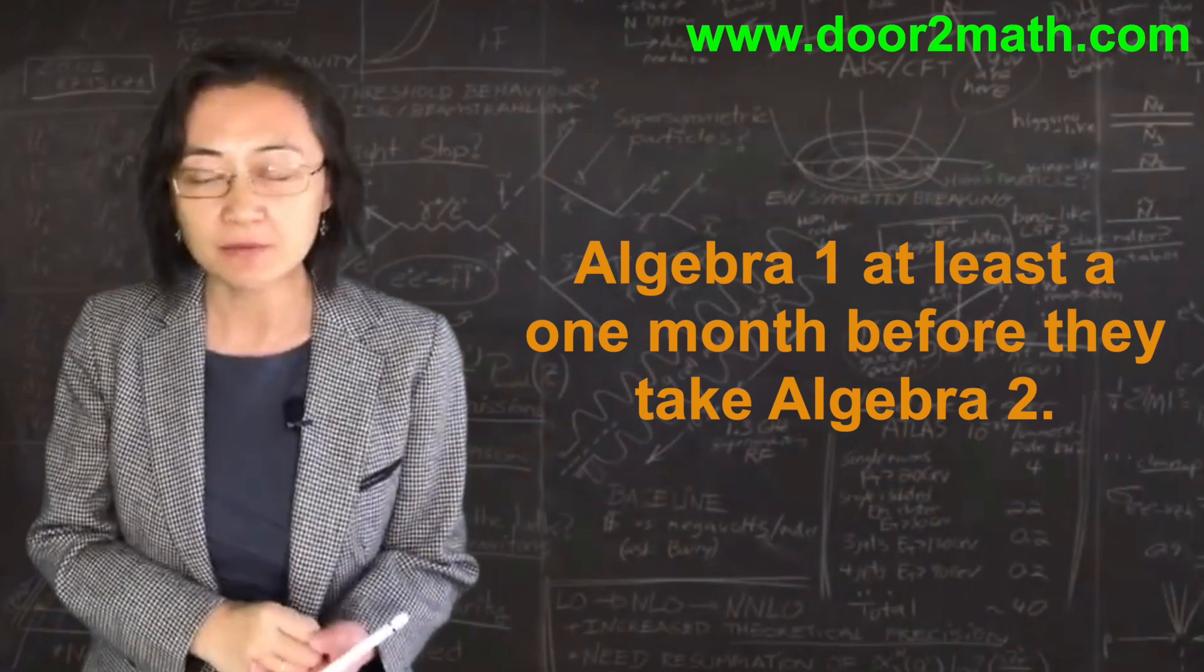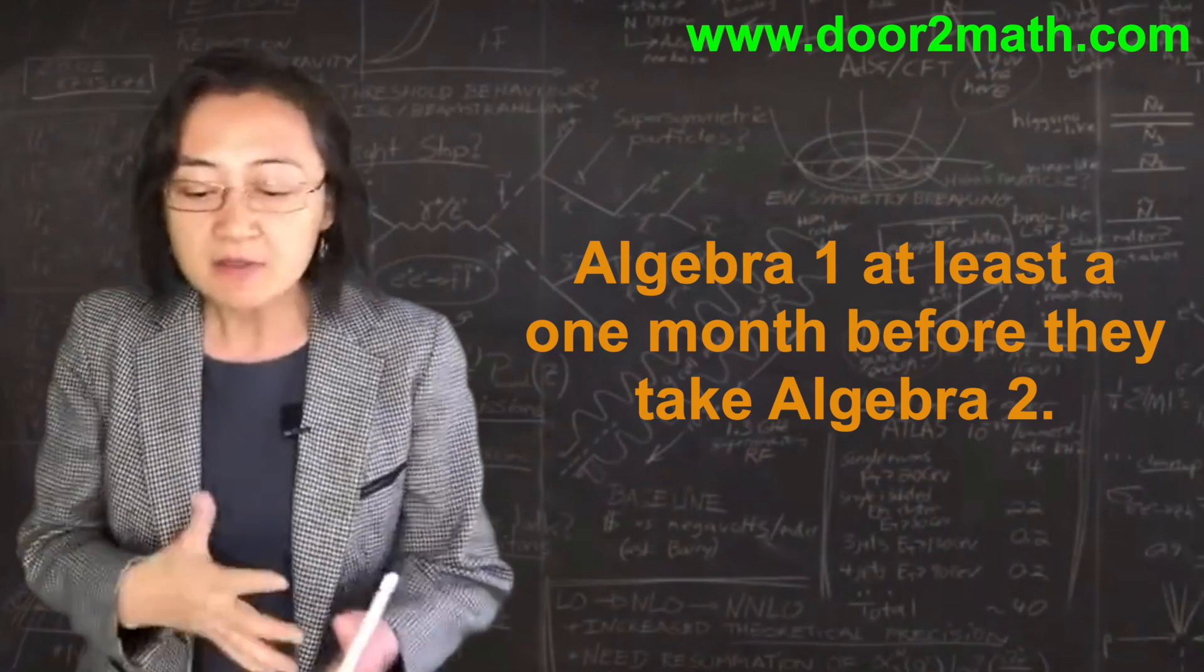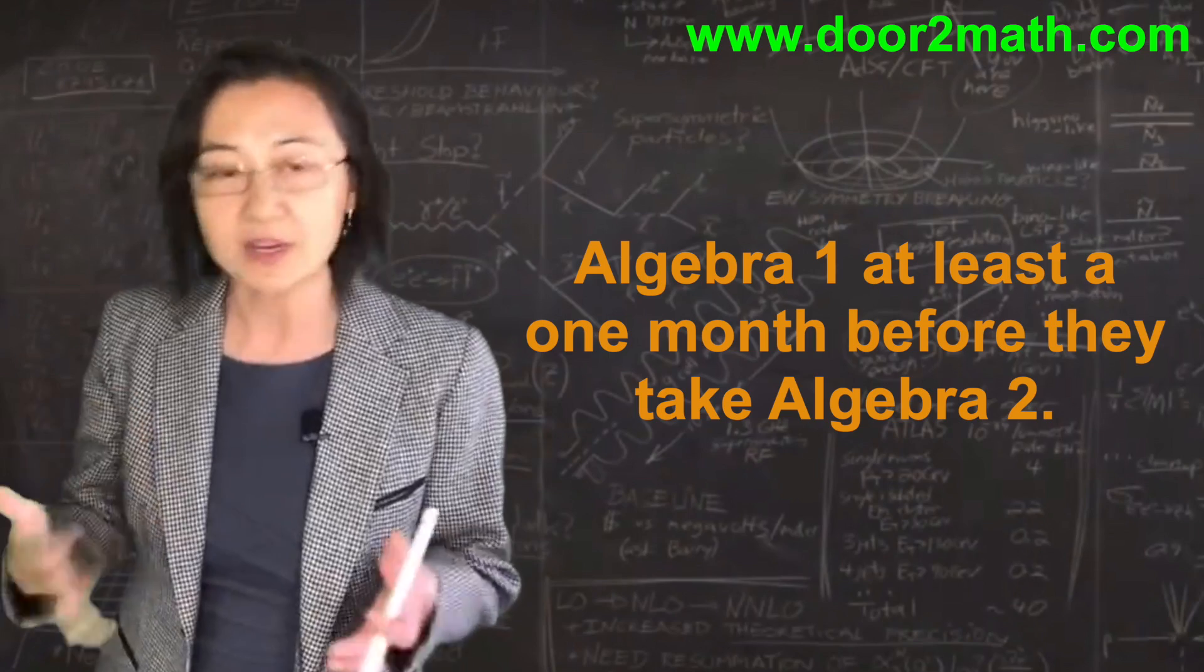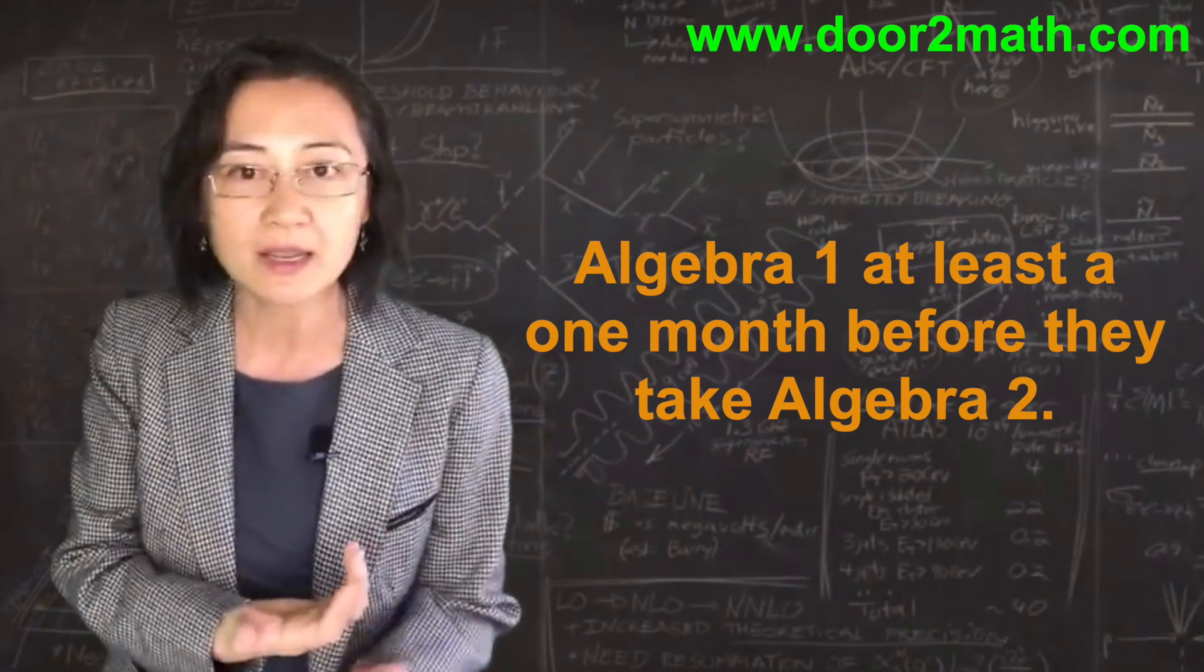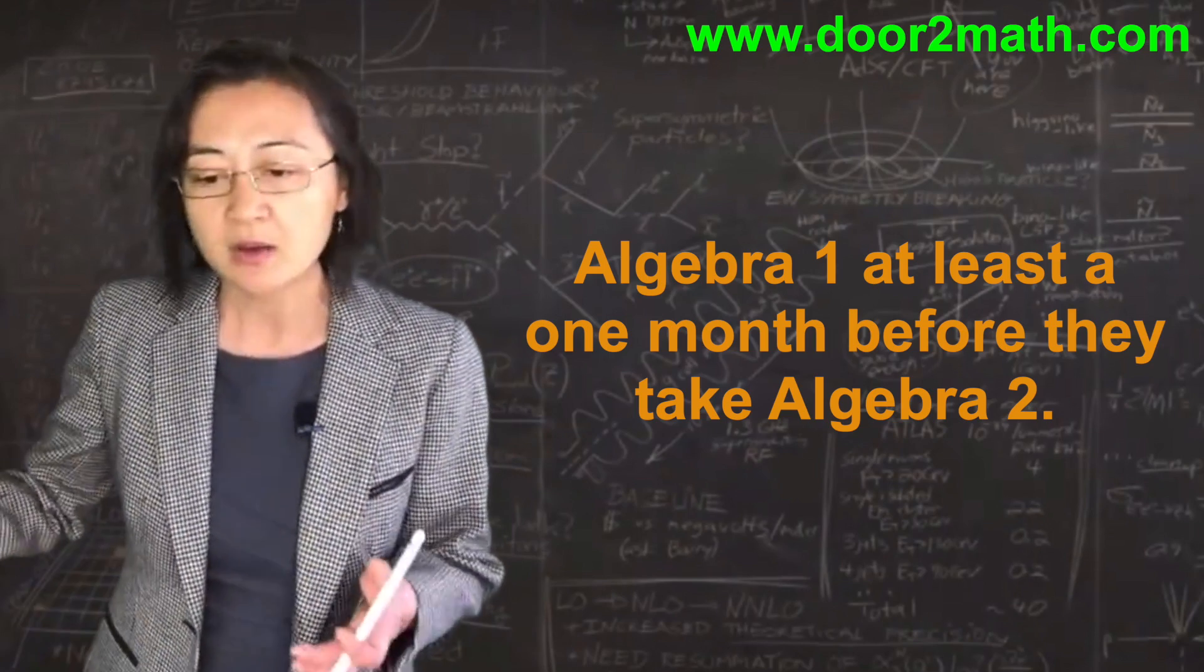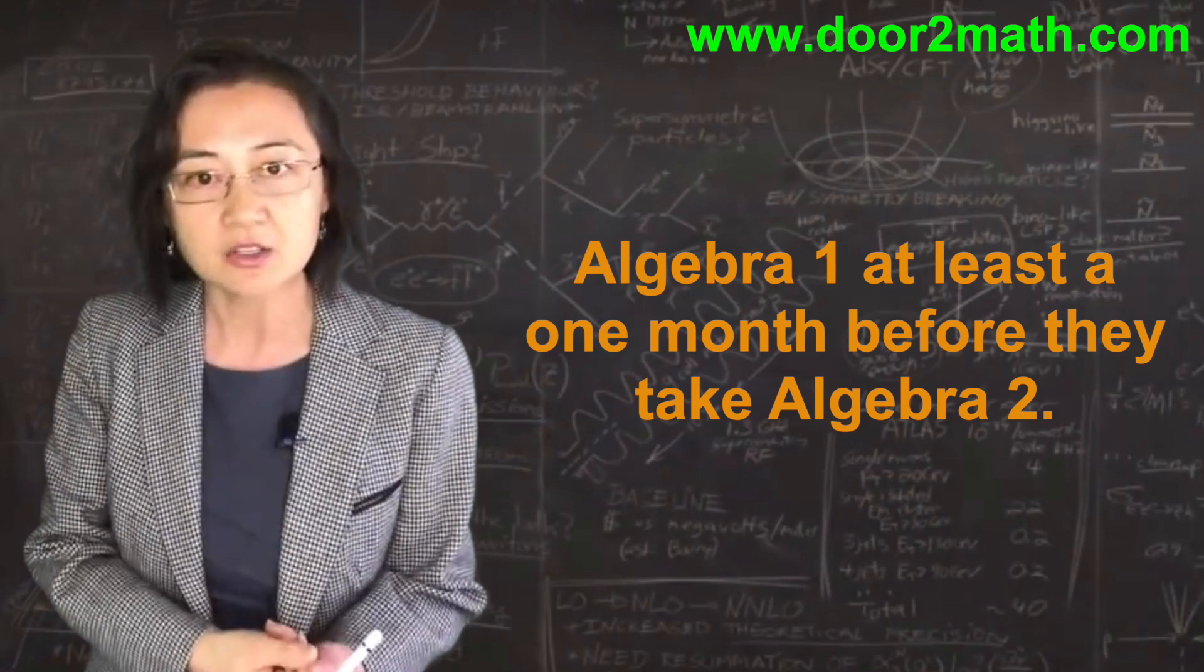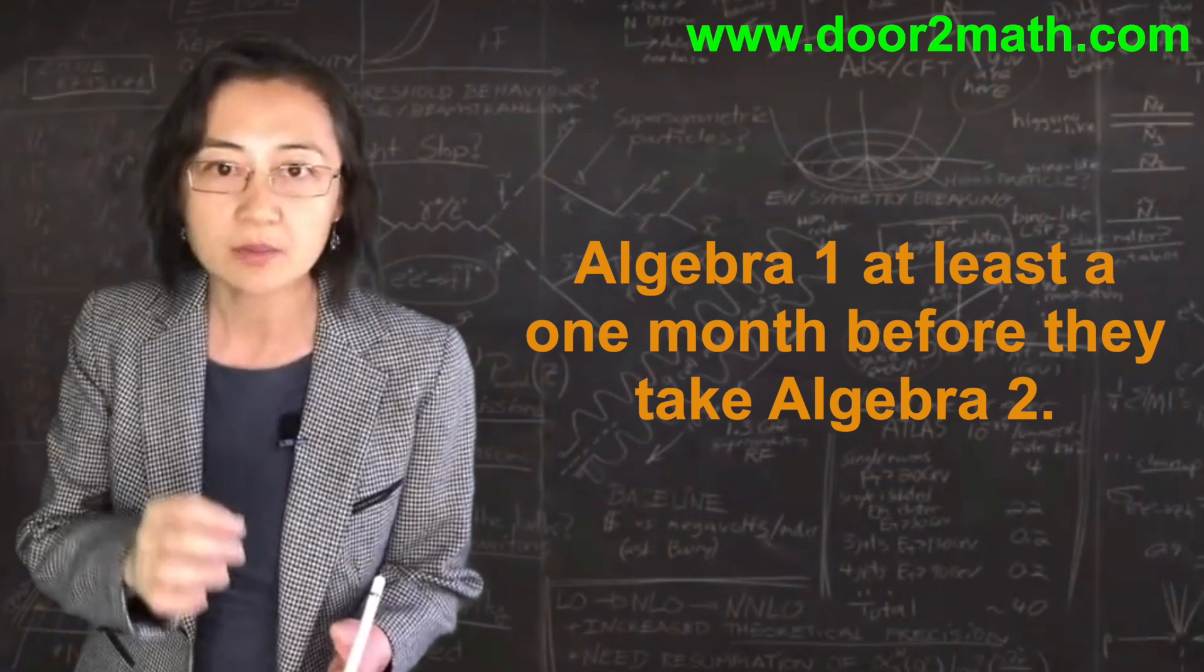The first one is to use a free online course like Khan Academy to brush up on Algebra 1 way before—at least one month before they take Algebra 2. Even if your child doesn't get back to school normally and ends up doing online learning, prepare for the worst case. Even if it's an online Algebra 2, still brush up on Algebra 1 at least one month before.